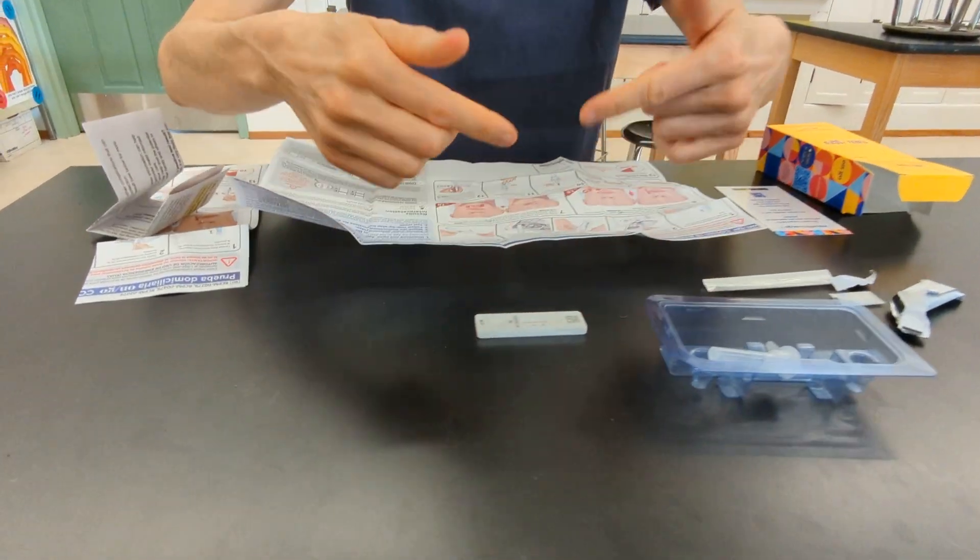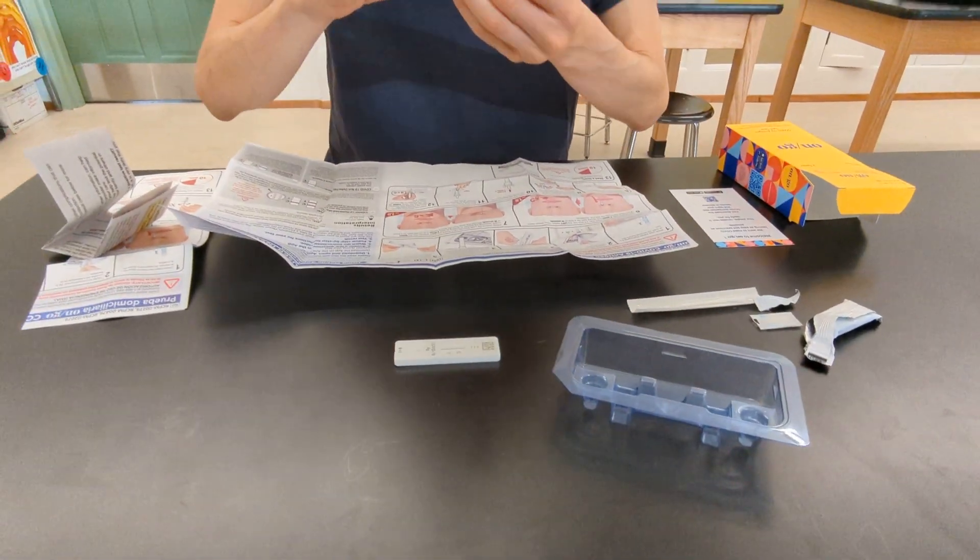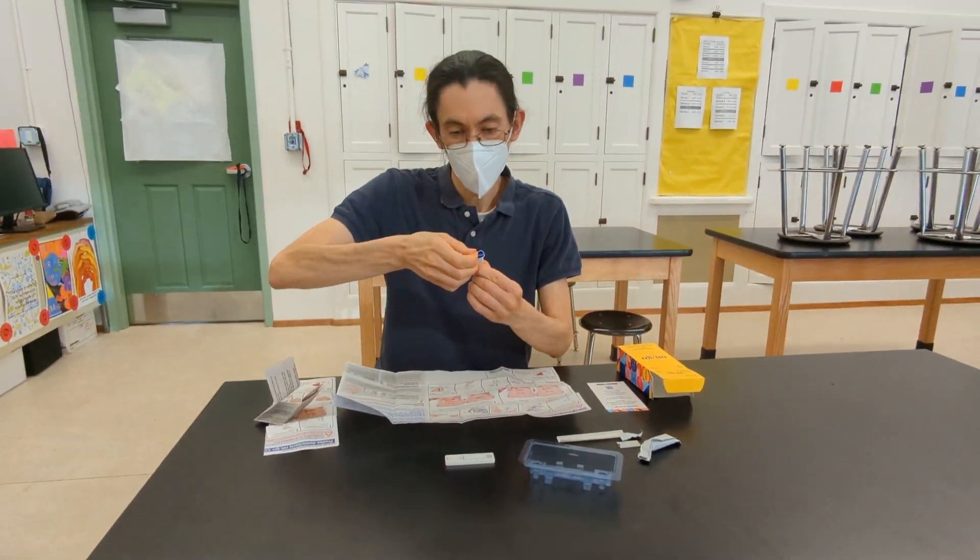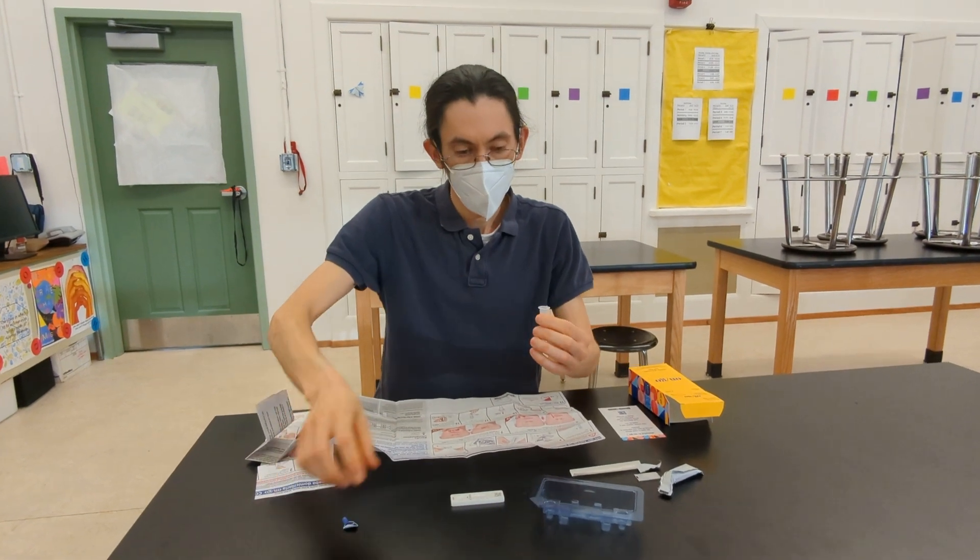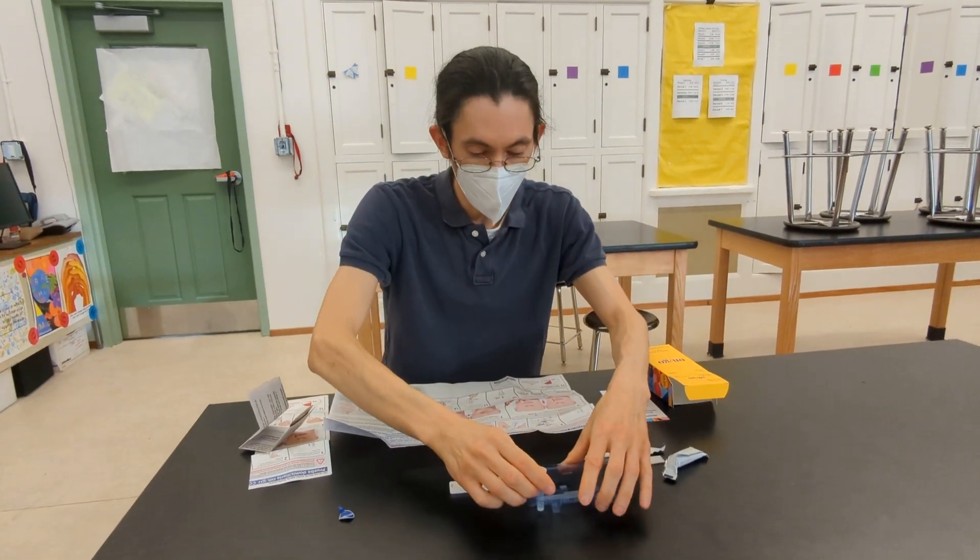It helps to orient the materials just like they have in the instructions. The next step is to peel off the lid of the extraction vial and place it in your container.